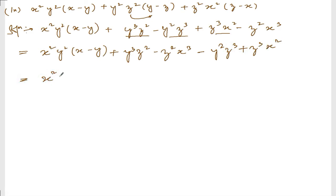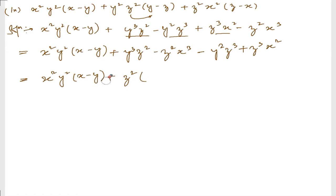Now from the first two terms I can take z² common. If I take z² common, it will be y³ minus x³. But I need x minus y, so I need to take minus here. If I take minus, it will be x³ minus y³.